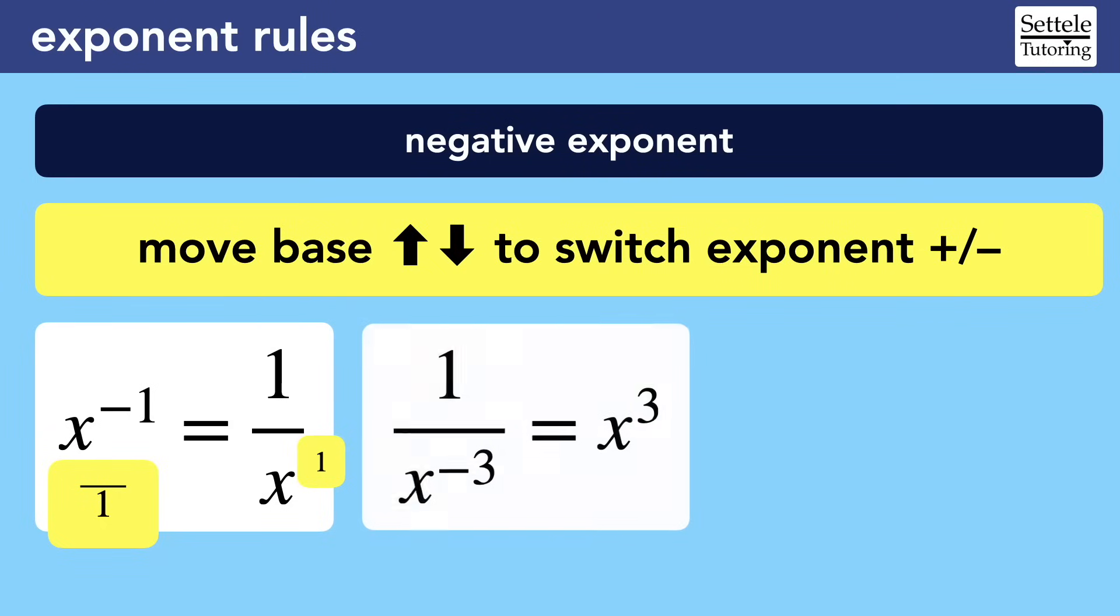Let's look at another example. Here the negative exponent is already on the bottom of the fraction, but it doesn't matter. Just follow the rule. We moved the base from the bottom to the top and we changed the exponent from negative to positive.